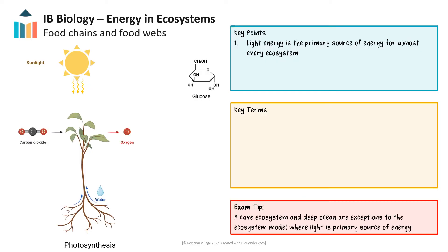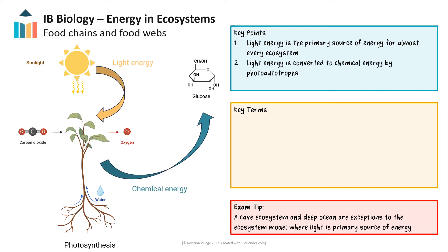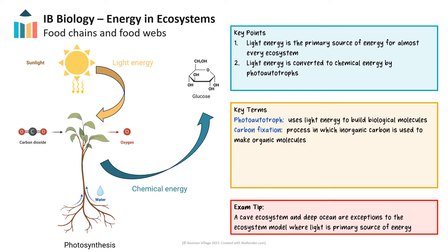Light energy is the primary source of energy for almost all ecosystems on Earth. It plays a central role in driving the process of photosynthesis, which is the key mechanism by which light energy is converted into chemical energy to sustain life in ecosystems. During photosynthesis, photoautotrophs, such as plants, fix atmospheric carbon dioxide into biological molecules like glucose.